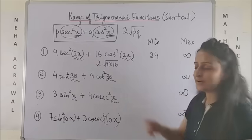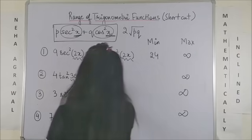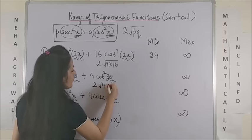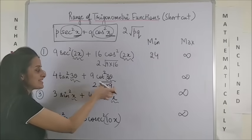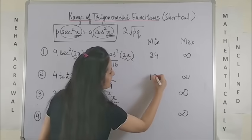Same way for the second one, the minimum value would be twice of square root of 4 into 9, which is 36. 36 square root is 6 into 2. So, it is simply 12.